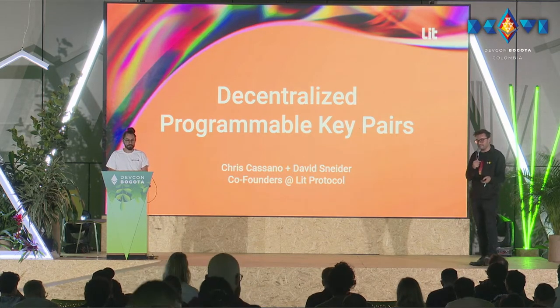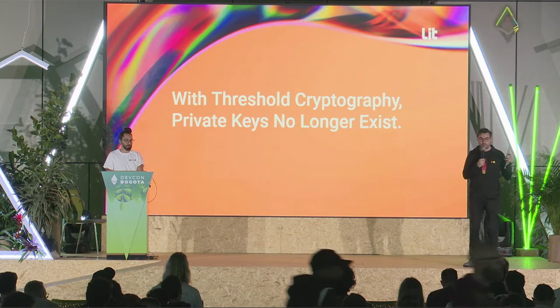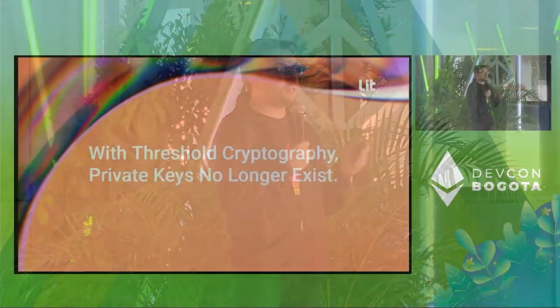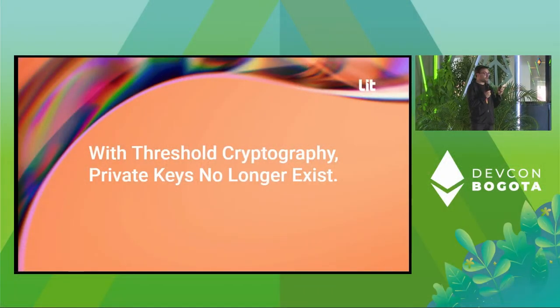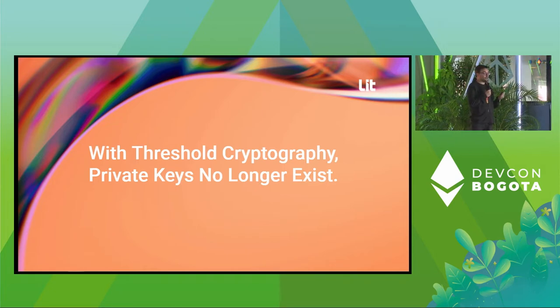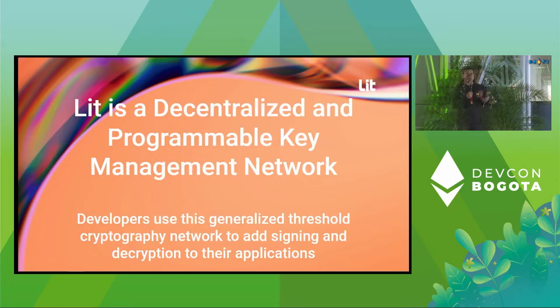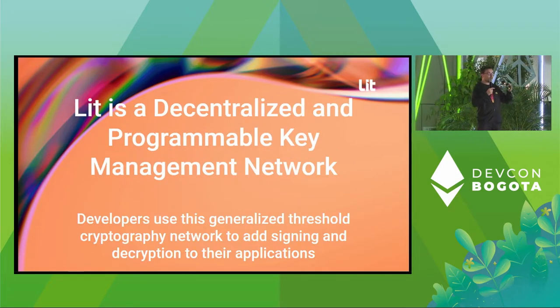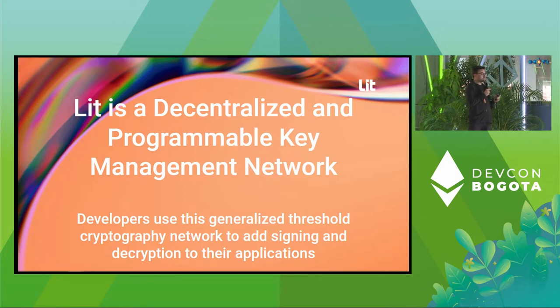To start with a big exciting hook: we are living in a world where, with threshold cryptography, from a certain point of view, you can consider that private keys no longer exist. This Lit network is essentially a distributed custody programmable key. One of the key technologies at the heart of this is something called a DKG, a distributed key generation. Lit is specifically a distributed network of nodes that are custodying shares of an underlying private key.